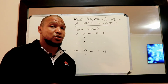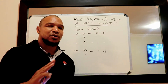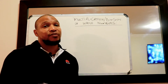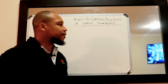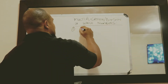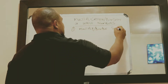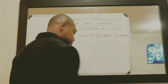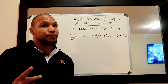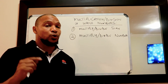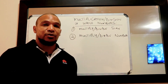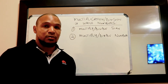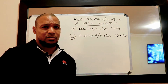We mustn't get confused when it comes to adding and subtracting — it's a whole different set of rules. Now for the method, we're only going to do two things: first, we multiply or divide the sign; second, we multiply or divide the number. Two things and then we're done.